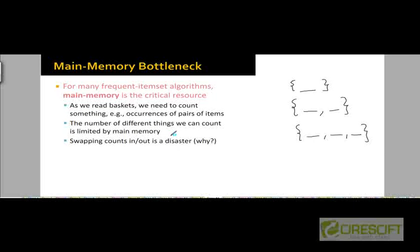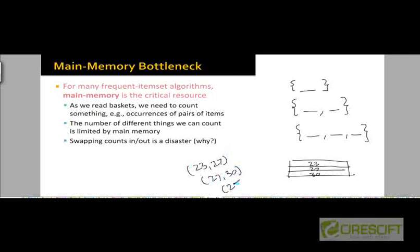You can think of bypassing this by using virtual memory — even if the data doesn't fit into main memory, we can save part of the data on disk and fetch it when needed. But the problem is that we will have to update these counts randomly. As we pass through the file, let's say we are looking at a basket with items 23, 27, and 30. We will generate three pairs: 23-27, 27-30, and 23-30.